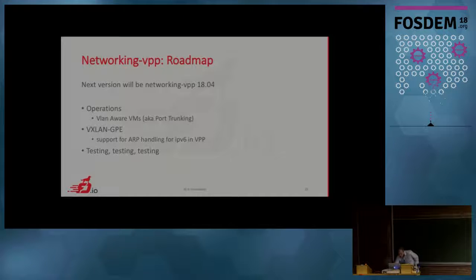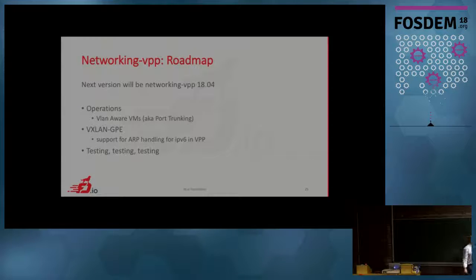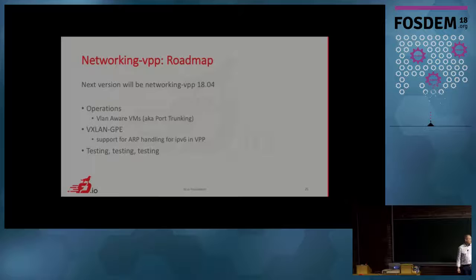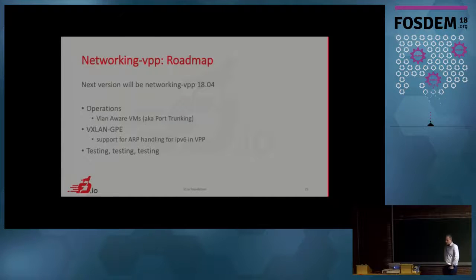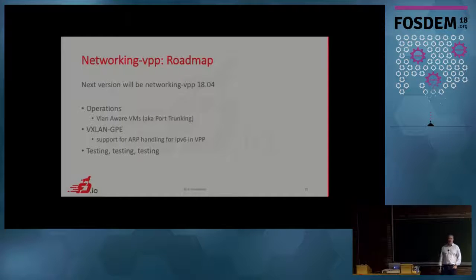On the roadmap, we now have a lot of features. The next things to work on are VLAN-aware VMs, which we don't yet have, and better IPv6 RA handling. These are the remaining features, and you are more than welcome to contribute or test if you want.